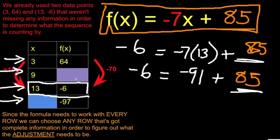That's the answer that would fill in for the purple box. Negative 63 plus 85 is 22. When x is 9, f of x is 22.